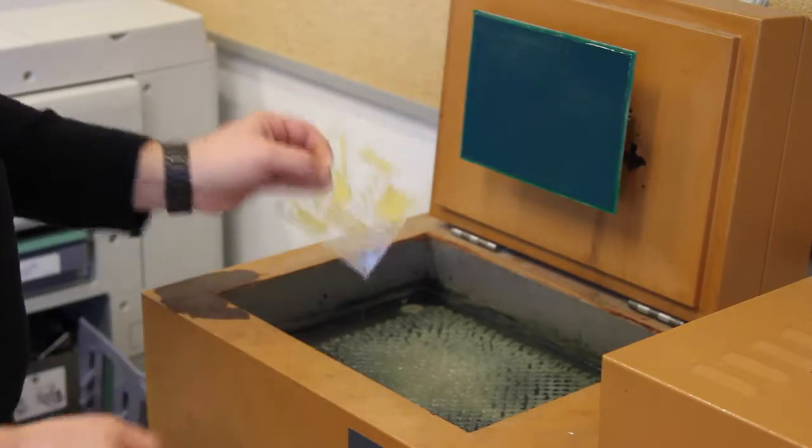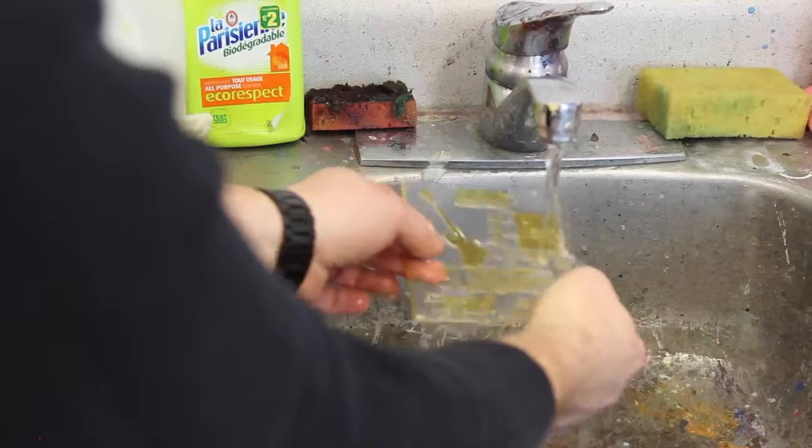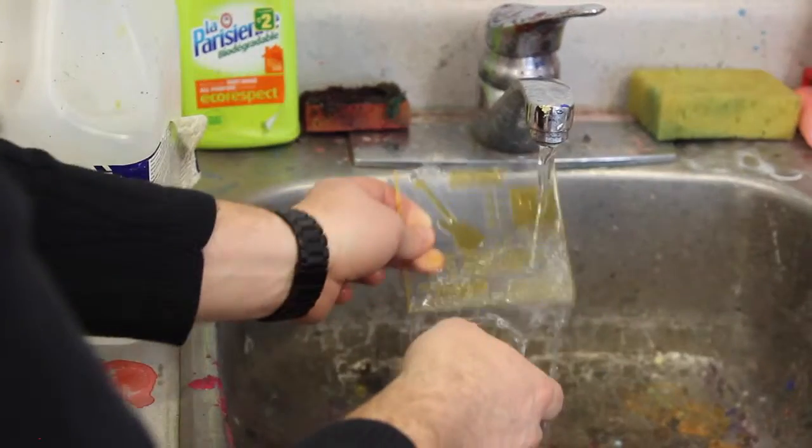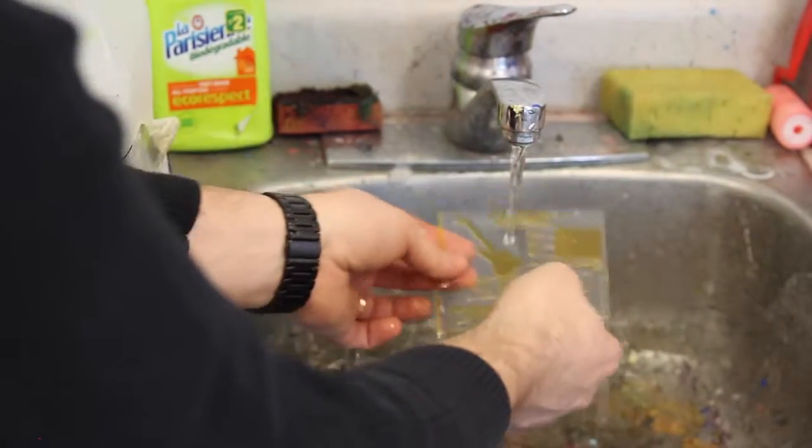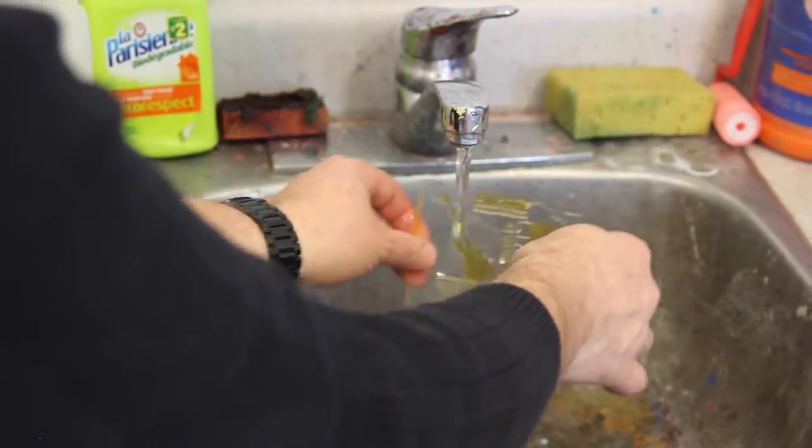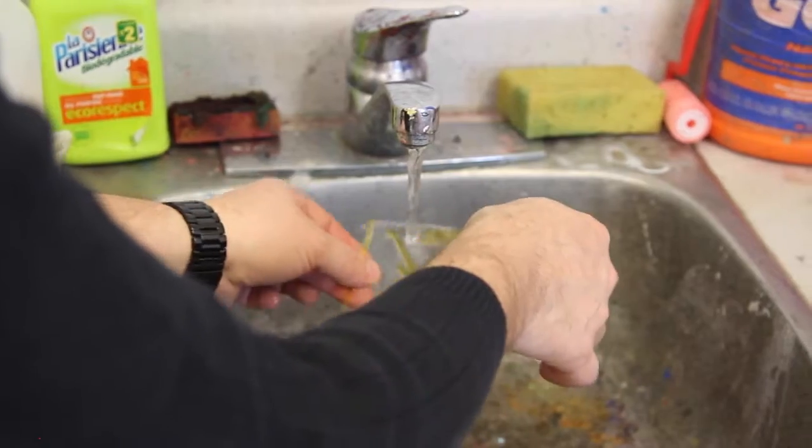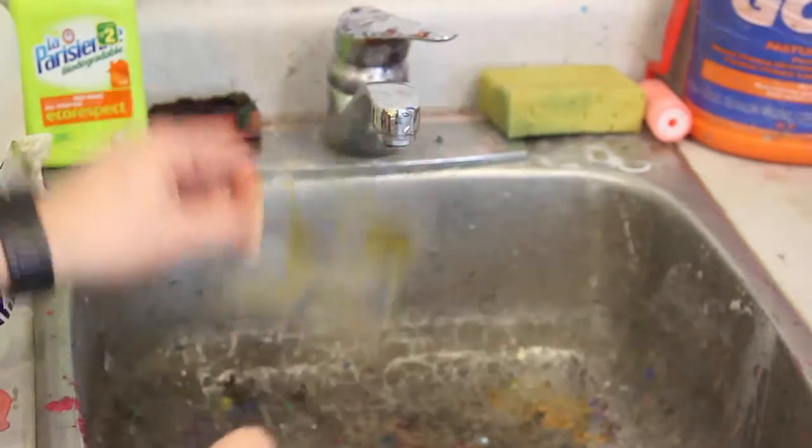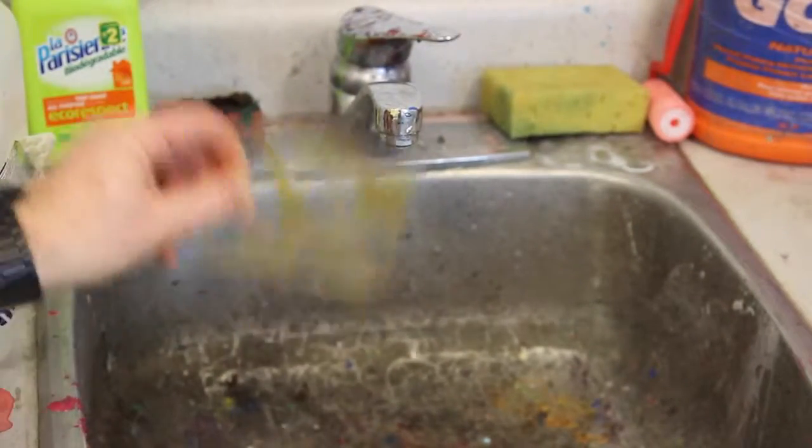So moving over to the sink now we're just going to give this a quick rinse under cold water just to get any excess polymer residue off prior to putting this in the drying tray to dry. Okay, so at this point we'll shake off any excess water.